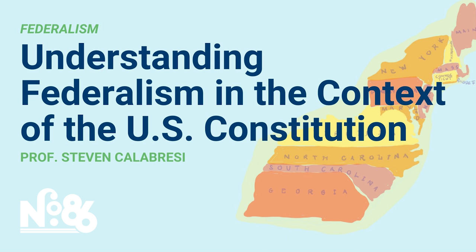Under the Guarantee Clause, when Congress admits a new state, it has an obligation to verify that the state's constitution is Republican in form. Congress has used that power by requiring the states of Utah and Idaho in their state constitutions to ban polygamy, which had been practiced by some fundamentalist Mormons prior to those states being admitted to statehood. Congress does scrutinize state constitutions and must certify that they are Republican in form before admitting them to the union. Those are the two additional enumerated powers of Congress in Article 4, Section 3 to admit new states, and Article 4, Section 4 to guarantee a Republican form of government.